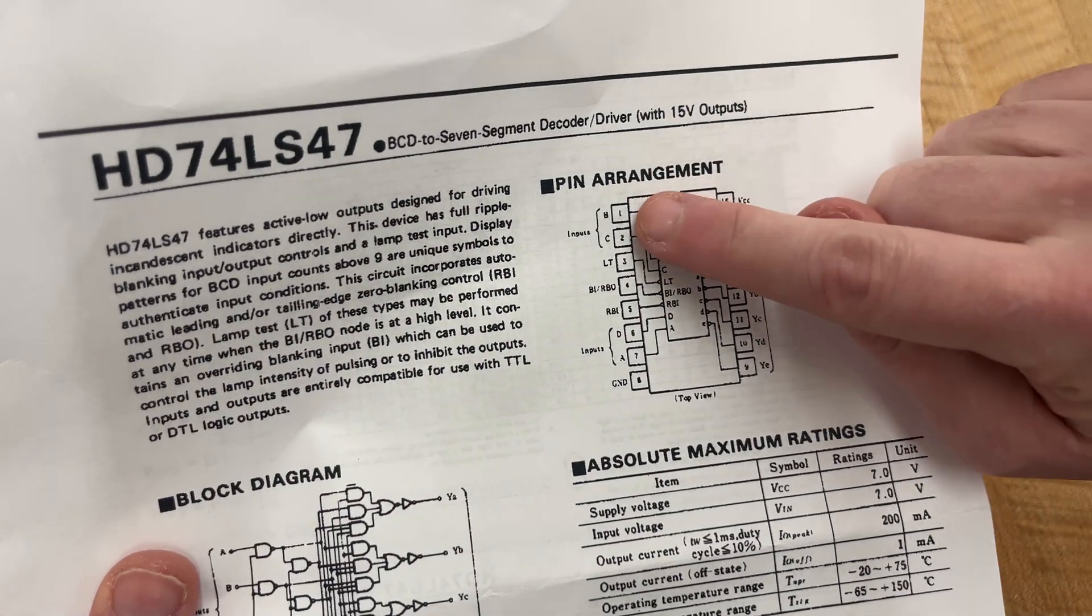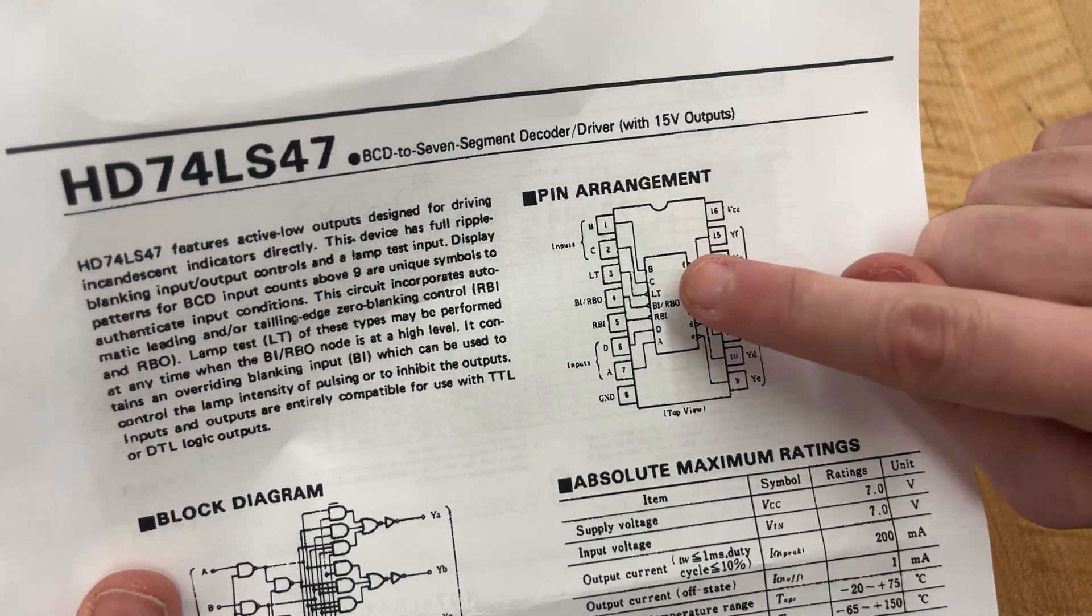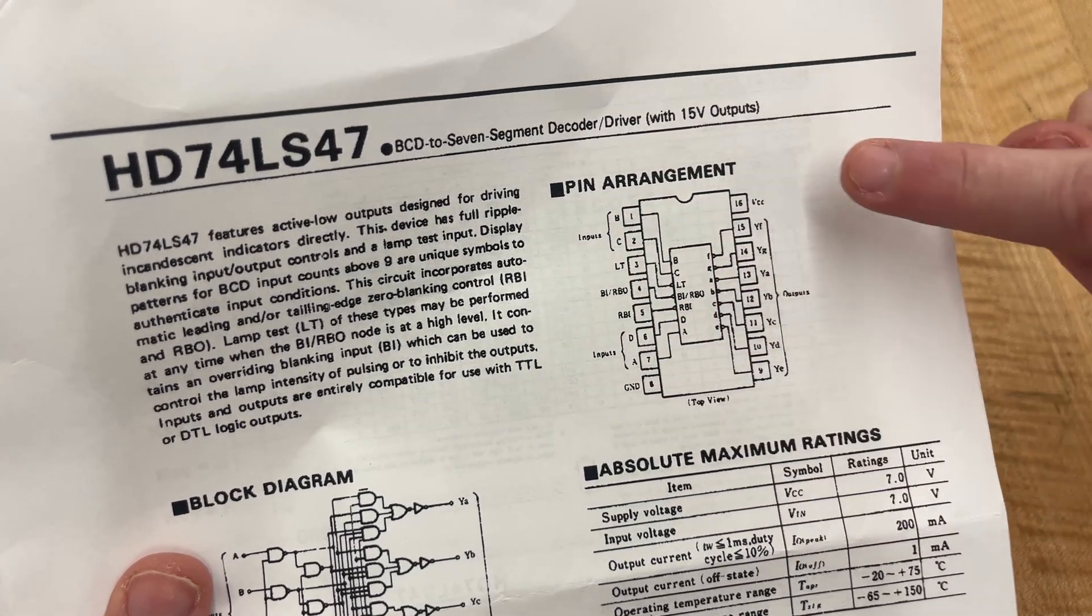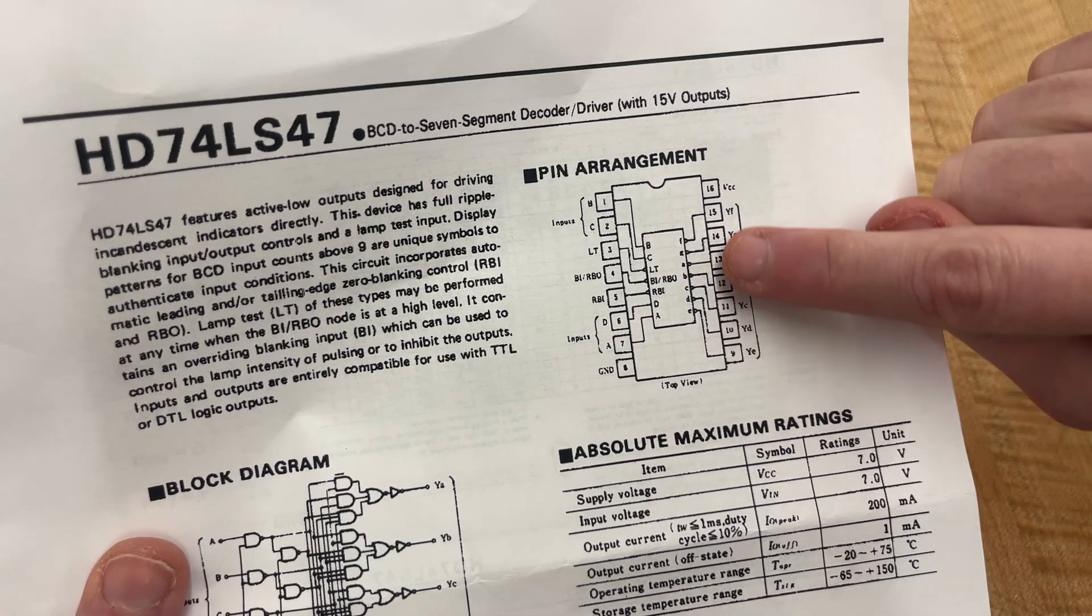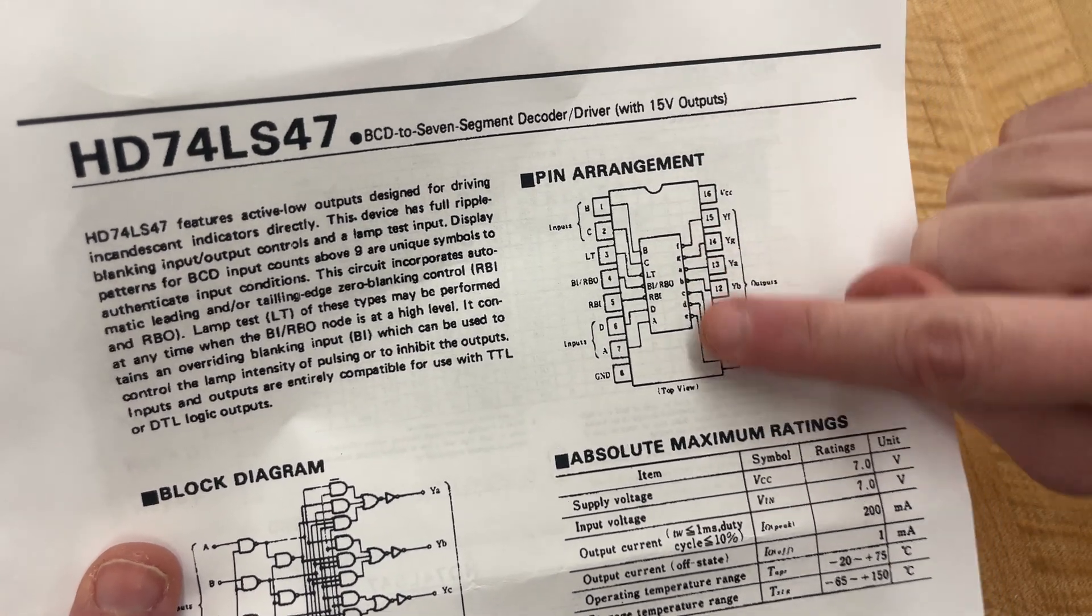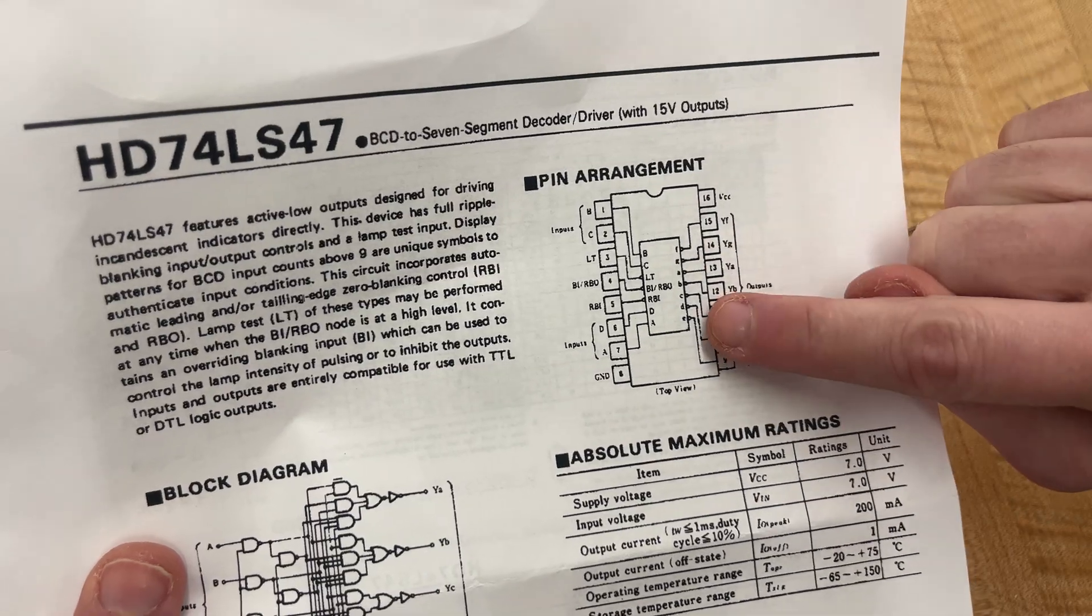So be sure you have your little divot in the correct orientation, and then you have your A, B, C, D inputs over here, and then your A, B, C, D, E, F, G inputs over here—or outputs, I'm sorry—those are going out to your seven-segment display.